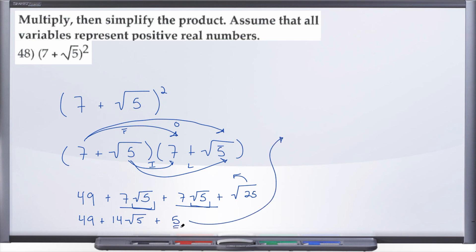And then lastly, we'll combine some like terms here. 49 plus 5 is going to give us 54, and then plus 14 radical 5, and there you have it, number 48.